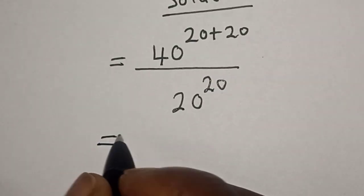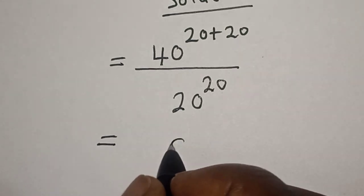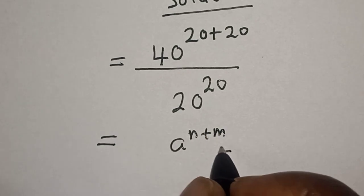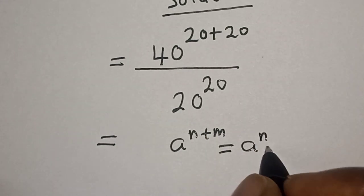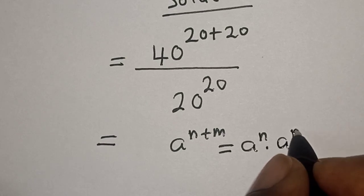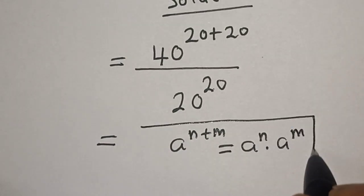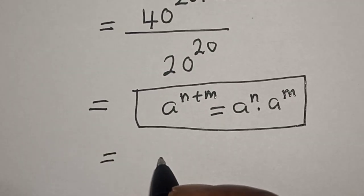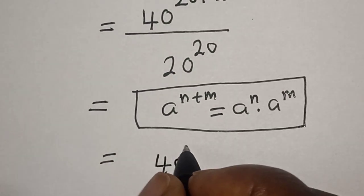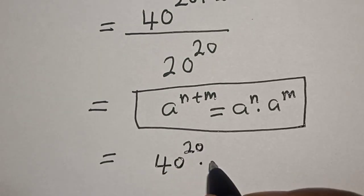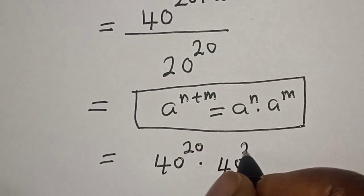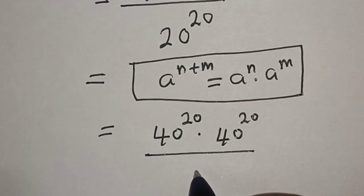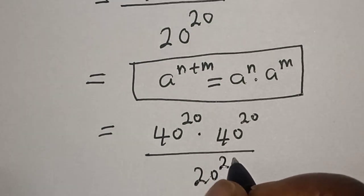This is equal to — remember this rule: a raised to power n plus m is equal to a raised to power n multiplied by a raised to power m. Applying this, we get 40 to the power of 20 multiplied by 40 to the power of 20, divided by 20 to the power of 20.